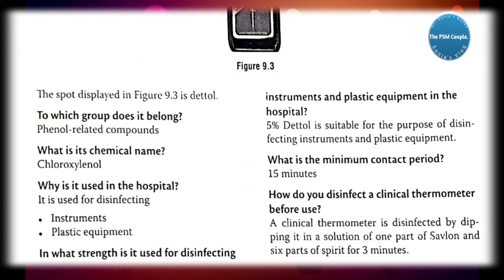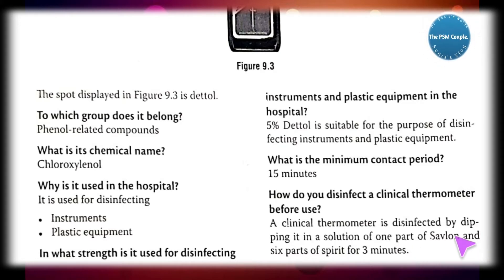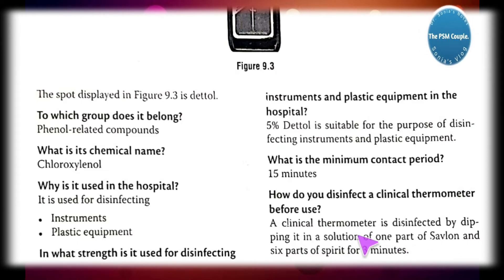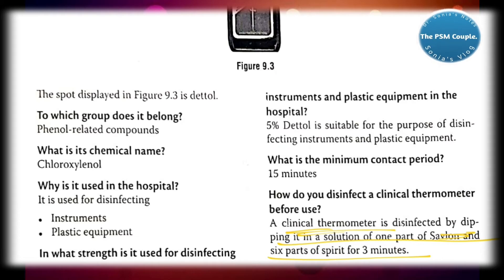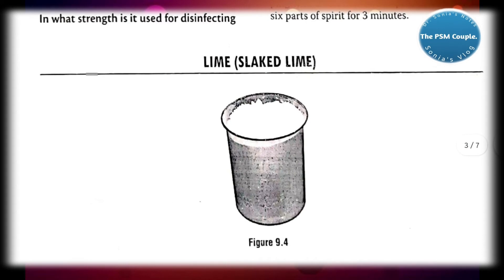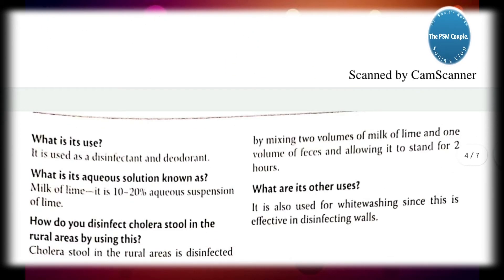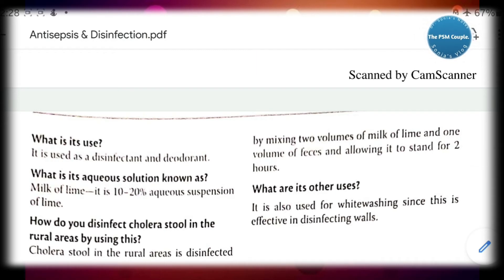How do you disinfect a clinical thermometer before use? A clinical thermometer is disinfected by dipping it in a solution of one part Savlon and six parts spirit for three minutes. This is very important: one part Savlon, six parts spirit, for three minutes.